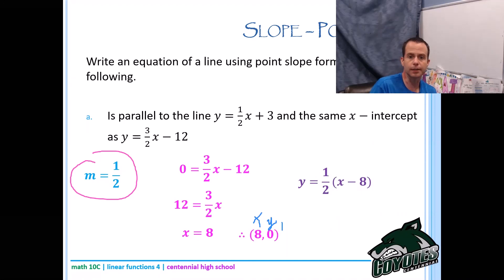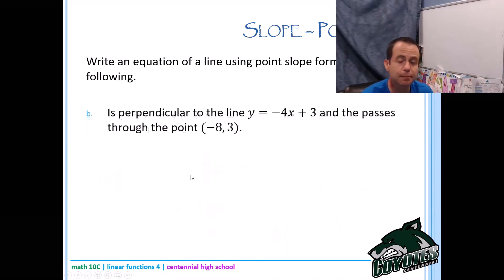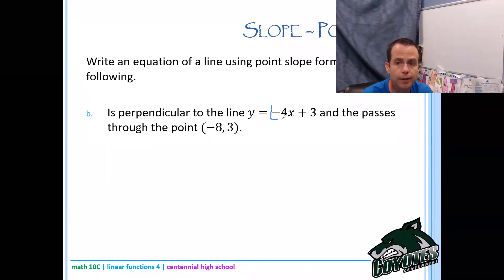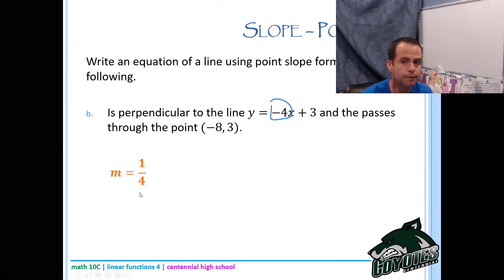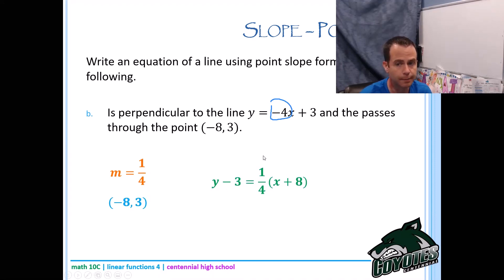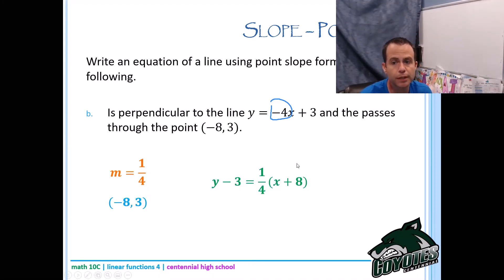For a line perpendicular to y equals negative 4x plus 3 passing through the point negative 8 comma 3: the slope of the given line is negative 4, and the perpendicular slope is its negative reciprocal, which is positive one over 4. With slope one quarter and the point negative 8 comma 3, plug into slope point form to get y minus 3 equals one quarter times x minus negative 8, which simplifies to y minus 3 equals one quarter times x plus 8.